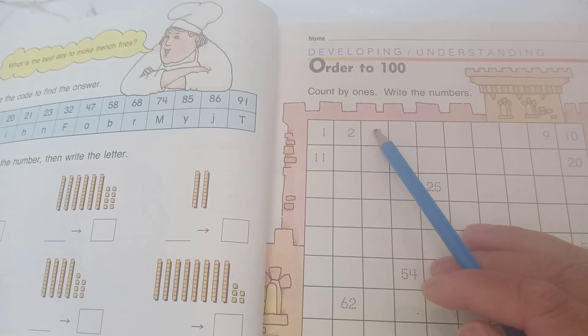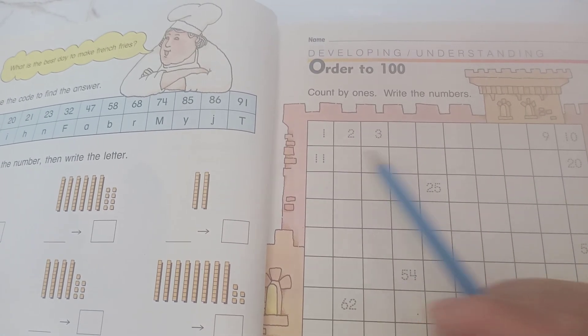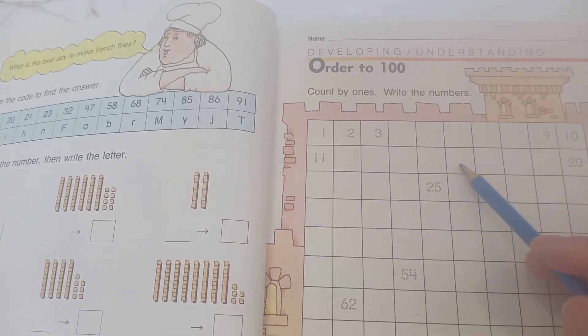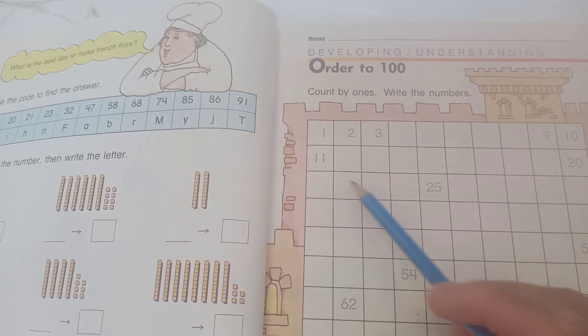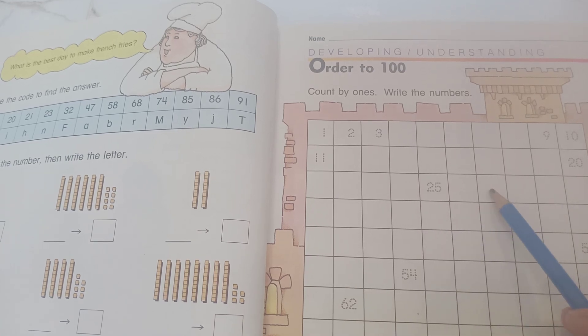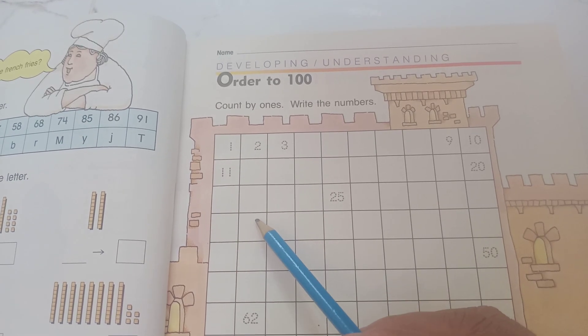One, two, three, four, five, six, seven, eight, nine, ten, 11, 12, 13, 14, 15, 16, 17, 18, 19, 20, 21, 22, 23, 24, 25, 26, 27, 28, 29, 30, 31, 32, 33.